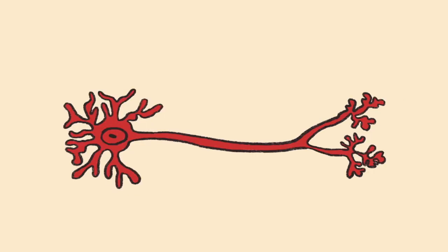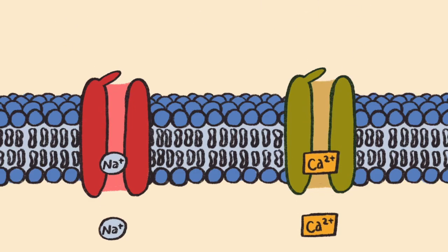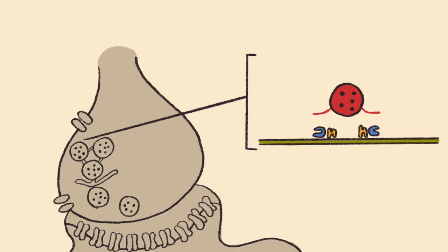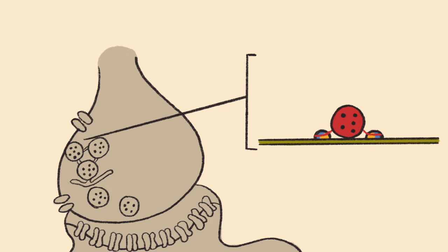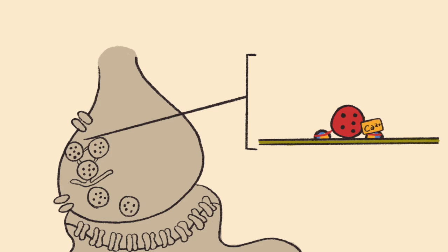Depolarization of the axon terminals results in a significant rush of sodium and calcium ions into the neuron, causing neurotransmitter vesicles to approach the presynaptic membrane. Synaptobrevin on the vesicle membrane interacts with Syntaxin and SNAP25 on the presynaptic membrane, forming the docking complex. Synaptotagmin then becomes bound or tagged with calcium, initiating fusion of the vesicle membrane with the presynaptic membrane of the axon terminal.